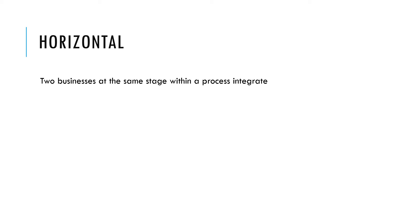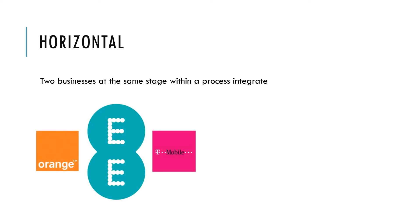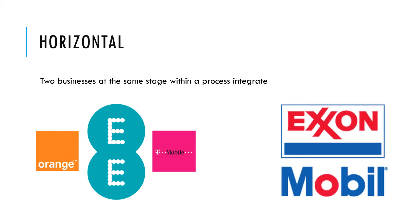The first type we'll look at is a horizontal merger or takeover, which is when both businesses are at the same stage within a production process. An example is when Orange, T-Mobile, and EE all merged together under the EE name — they were all mobile phone service operators. Another example is Exxon and Mobil joining together; both companies sold petrol at the same stage of the production process.